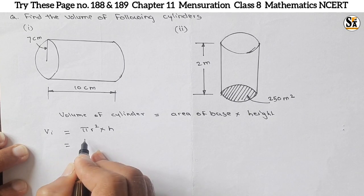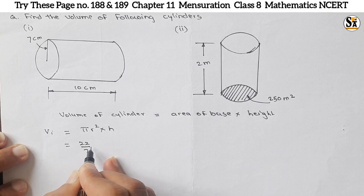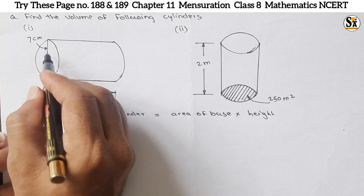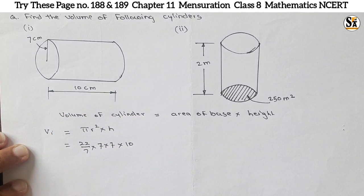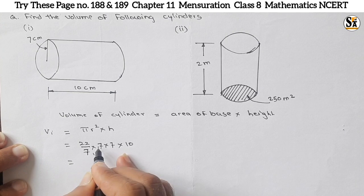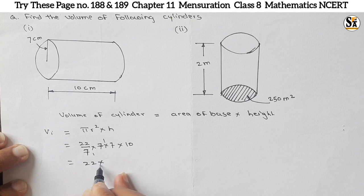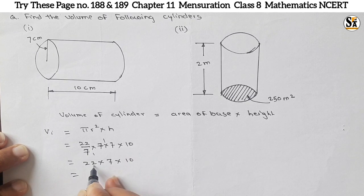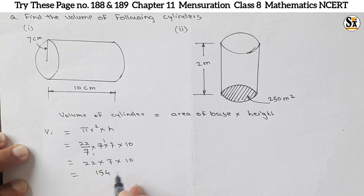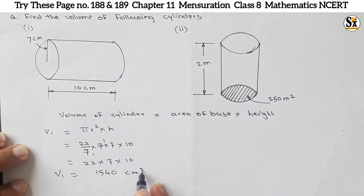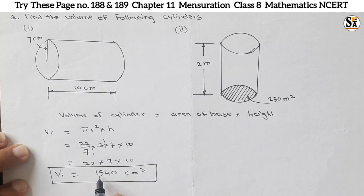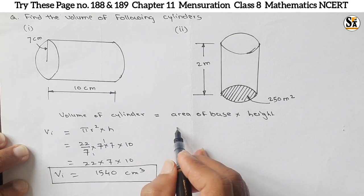For the first cylinder, V₁ = π r² h. Put π = 22/7, r = 7 cm, and h = 10 cm. So V₁ = (22/7) × 7 × 7 × 10. The 7 in the numerator and denominator cancel, leaving 22 × 7 × 10 = 154 × 10 = 1540. So volume of the first cylinder is 1540 centimeter cube.